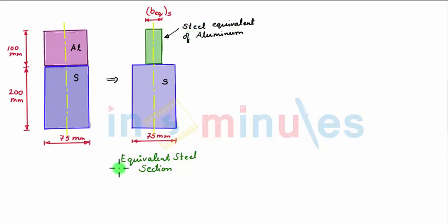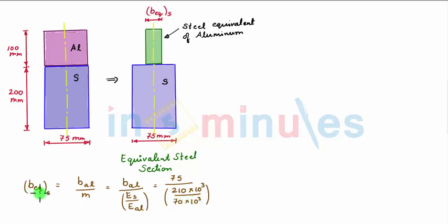And this whole section is an equivalent steel section where B_equivalent of steel is equal to B of aluminium upon M, where M is a modular ratio and is given as E of steel upon E of aluminium. So this is equal to 75 mm upon (210 × 10^3 upon 70 × 10^3). So we get B_equivalent of steel equal to 25 mm.